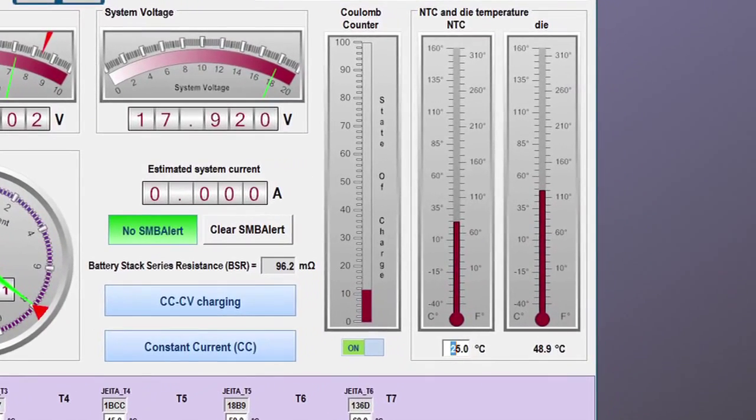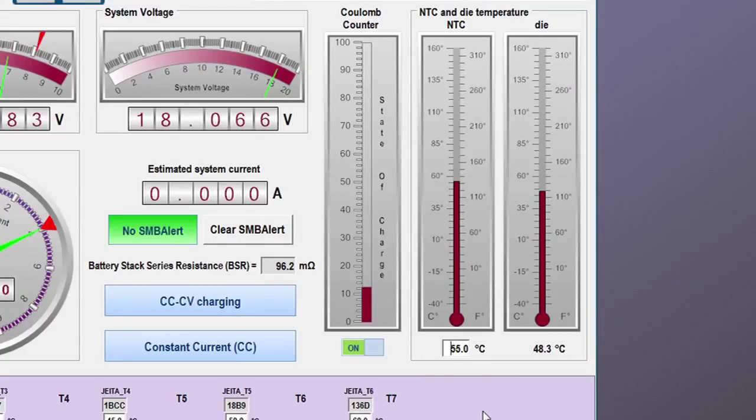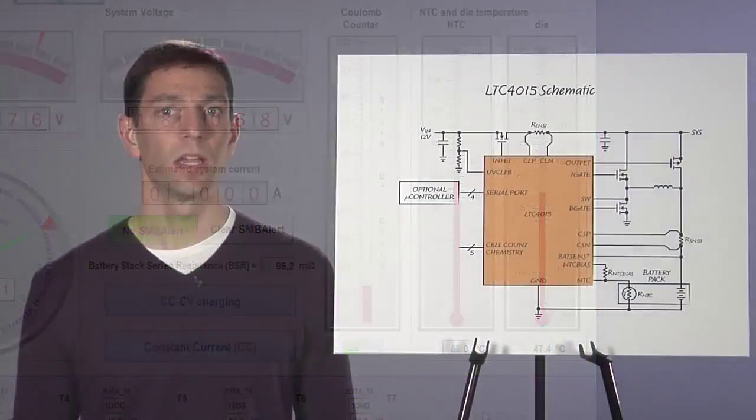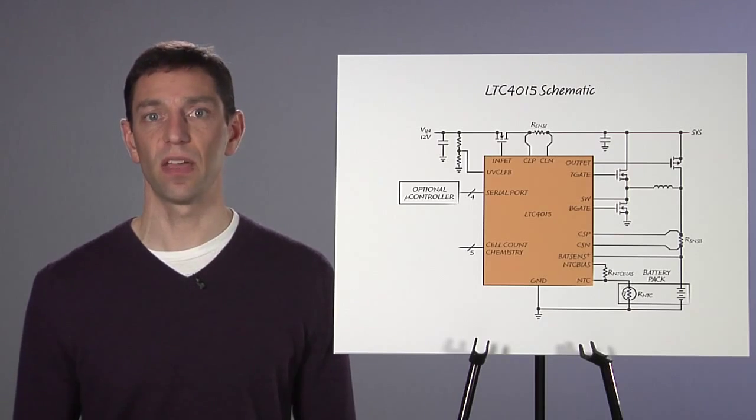The DC2039A demo board includes a digitally controlled resistor to simulate ambient temperature changes. Next to the simulated NTC temperature is a readout of the LTC4015 die temperature as measured by its on-chip temperature system. The GUI highlights many of the LTC4015 features and gives you a good idea of everything that can be measured and monitored.